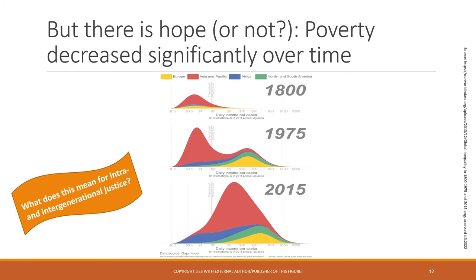But there is hope. The working and living conditions of the poorest of the poor are of paramount importance for sustainable development, and we see that poverty has decreased significantly over time. Figures from more than 100 years ago to a few years ago show that daily income per capita has increased quite significantly. The question is what this means for intra-generational justice — and for intergenerational justice, it also depends on how we consume this new wealth.